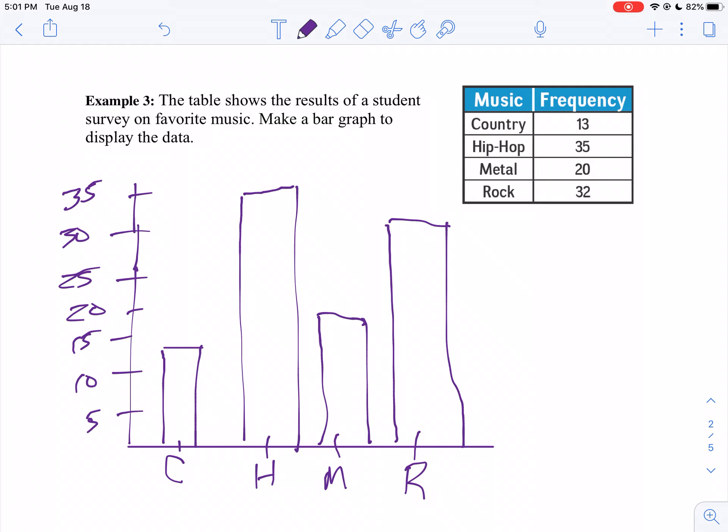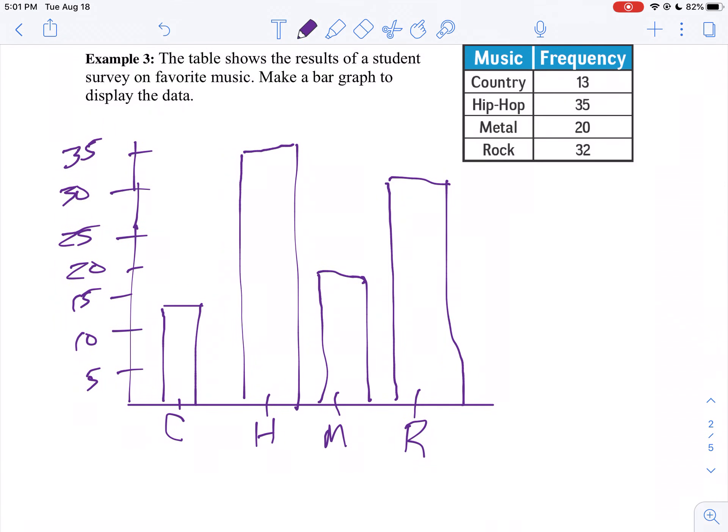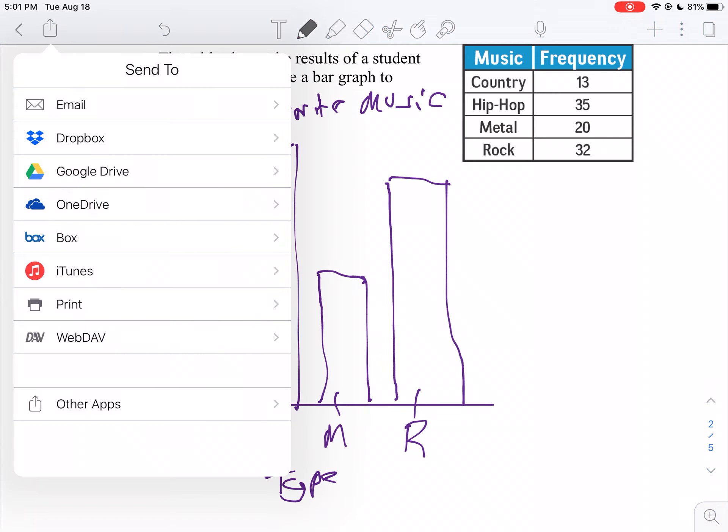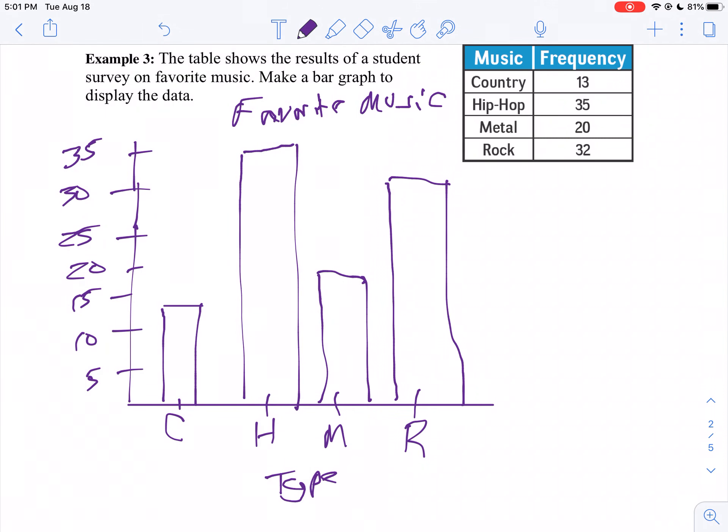And so when you make your graph, make sure you label it. So we'll call this favorite music. And then we'll put the type on the x-axis and we'll put students on the y-axis.